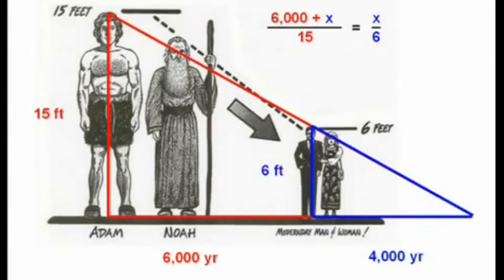Now what can we do with this information? Well, let's say that it's another 2,000 years before Jesus returns. How tall will people be? Again, it's similar triangles. 2,000 is half of 4,000, so mankind's height will be half of 6 feet or 3 feet.